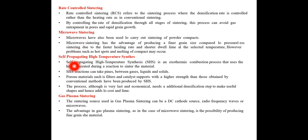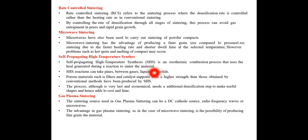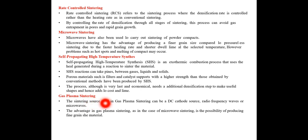Self-propagating high temperature synthesis (SHS) is an exothermic combustion process that uses heat generated during a reaction to sinter the material. Gas plasma sintering: the sintering source used can be a DC cathode source, radio frequency waves, or microwaves. The advantage of gas plasma sintering, as in microwave sintering, is the possibility of producing fine-grain-sized material.